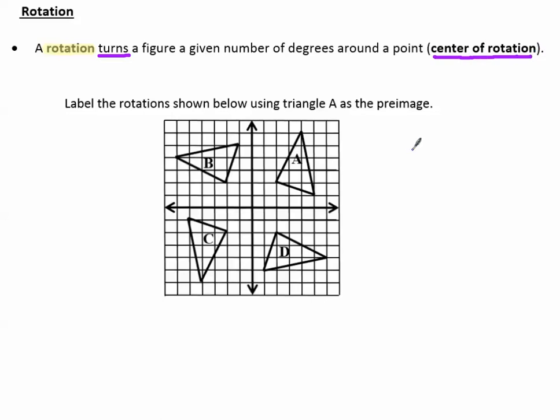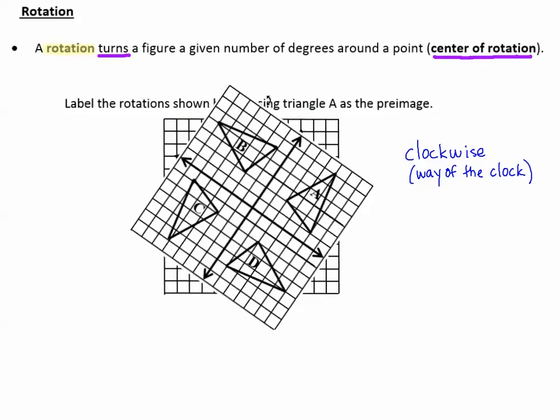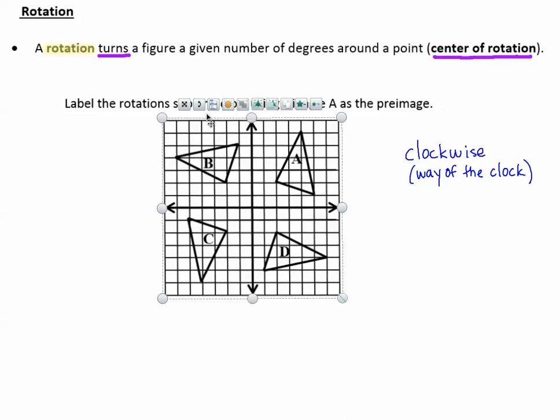A figure can be rotated clockwise, which is the way of the clock, the direction of the clock. How does a clock rotate? This direction. So rotating to the right is clockwise.